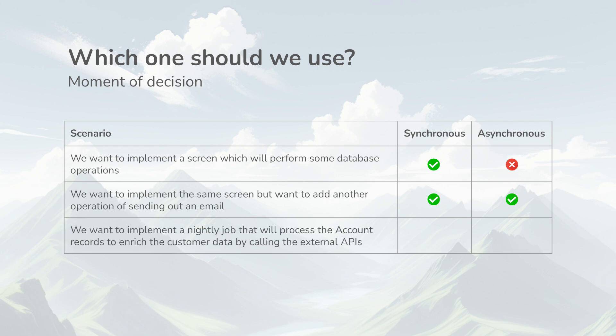If we want to implement a nightly job that processes account records to enrich customer data by calling external APIs, since this happens in the background and operates on a large dataset, we should use asynchronous Apex. To conclude, we should not choose synchronous or asynchronous Apex based solely on technical differences or ease of use. We should analyze the requirement from a technical perspective and implement the best-suited solution — sometimes using one, and sometimes a blend of both.